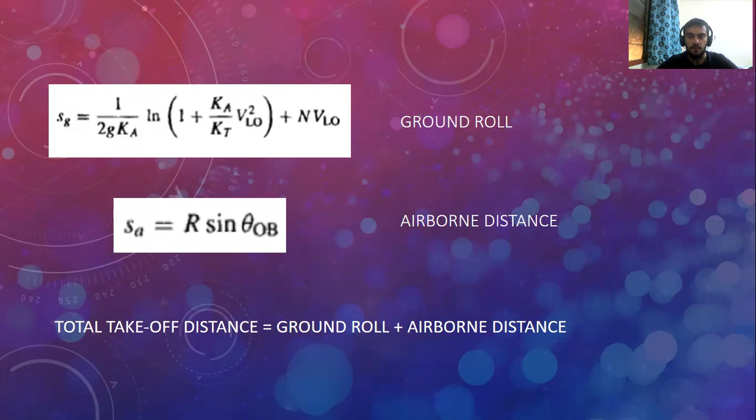This is the formula for the ground roll, SG, and SA is the airborne distance. So the total takeoff distance is ground roll plus airborne distance, and you get the total takeoff distance.